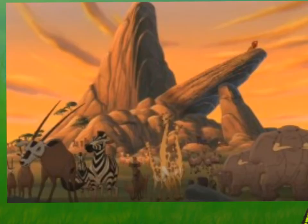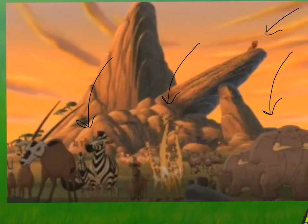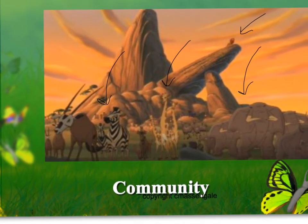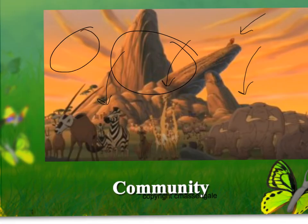Looking at this next example, we have a group of elephants, a population of giraffes, some zebra, and Mufasa up on the rock. If we're just looking at the living things, we would call this a community — that's all the populations within a given environment. But if we also think about the abiotic factors — the non-living things like the rocks, sunlight, clouds, wind, and air — then we would call this an ecosystem.